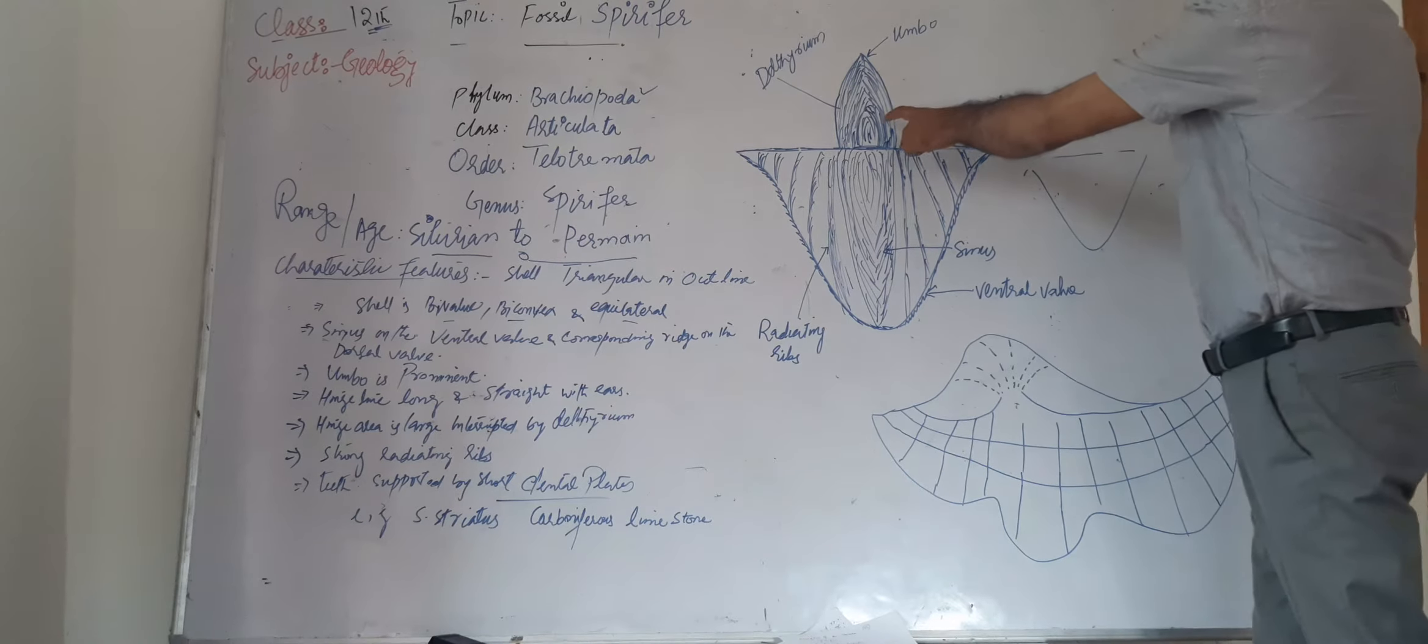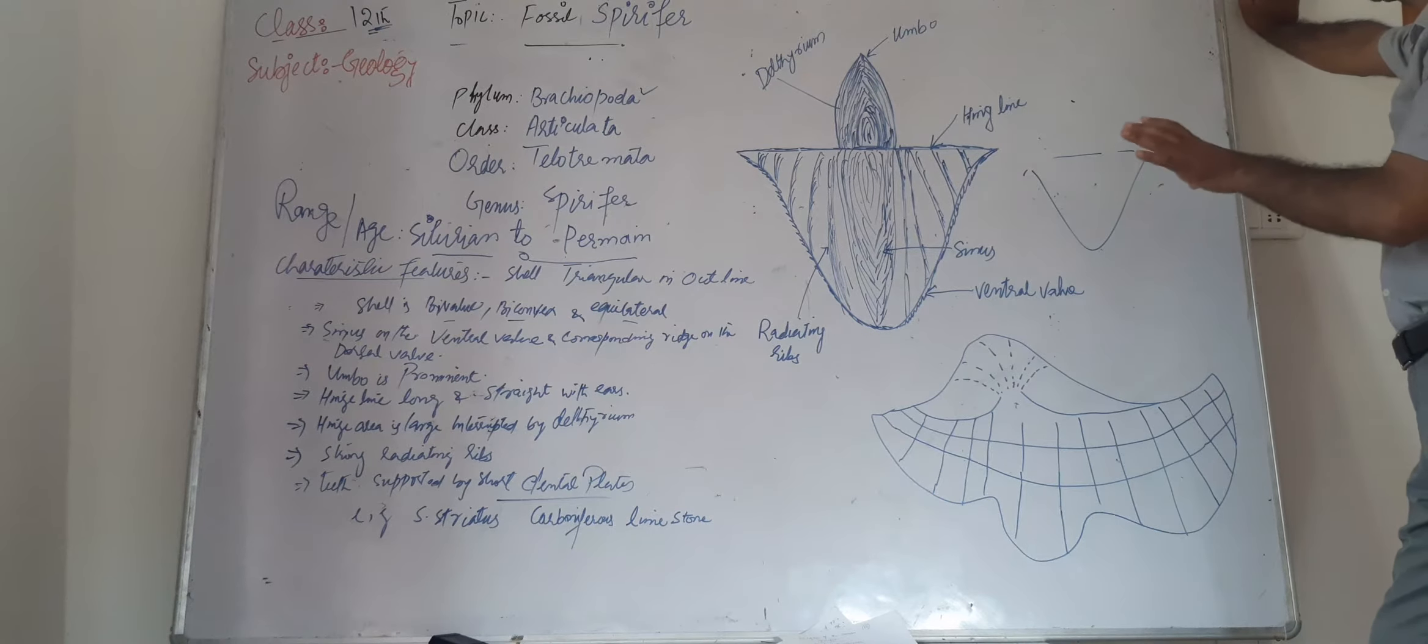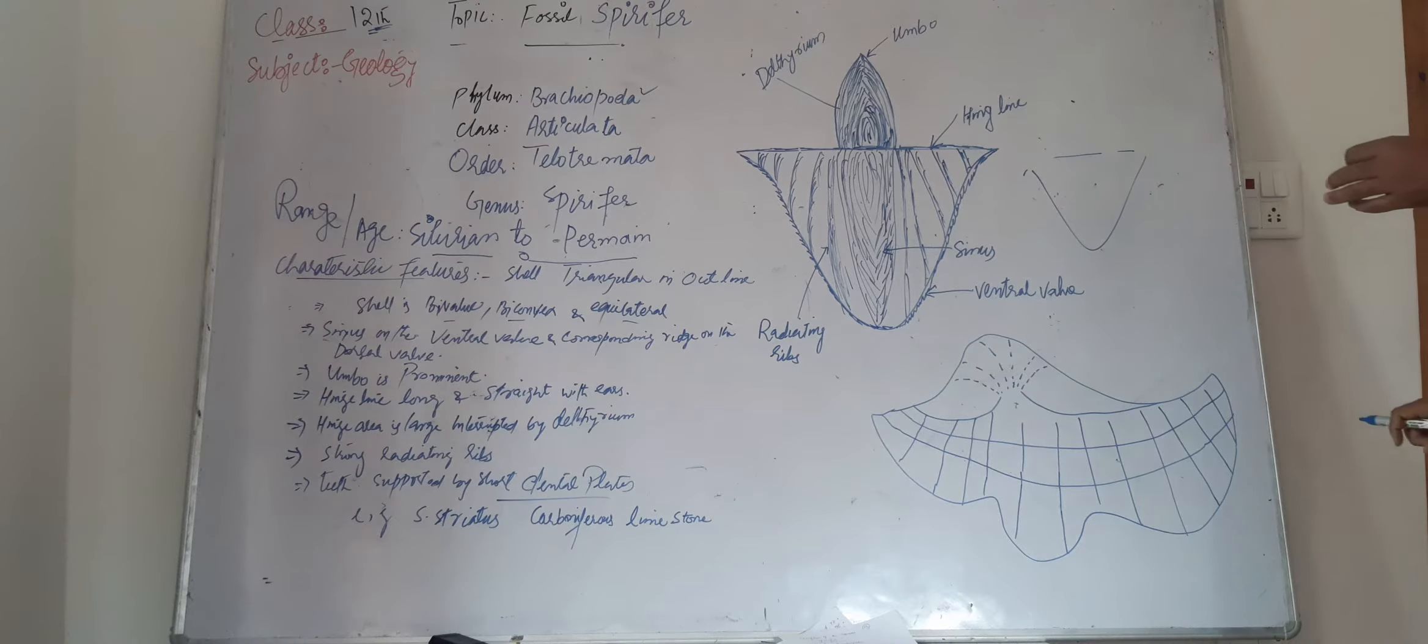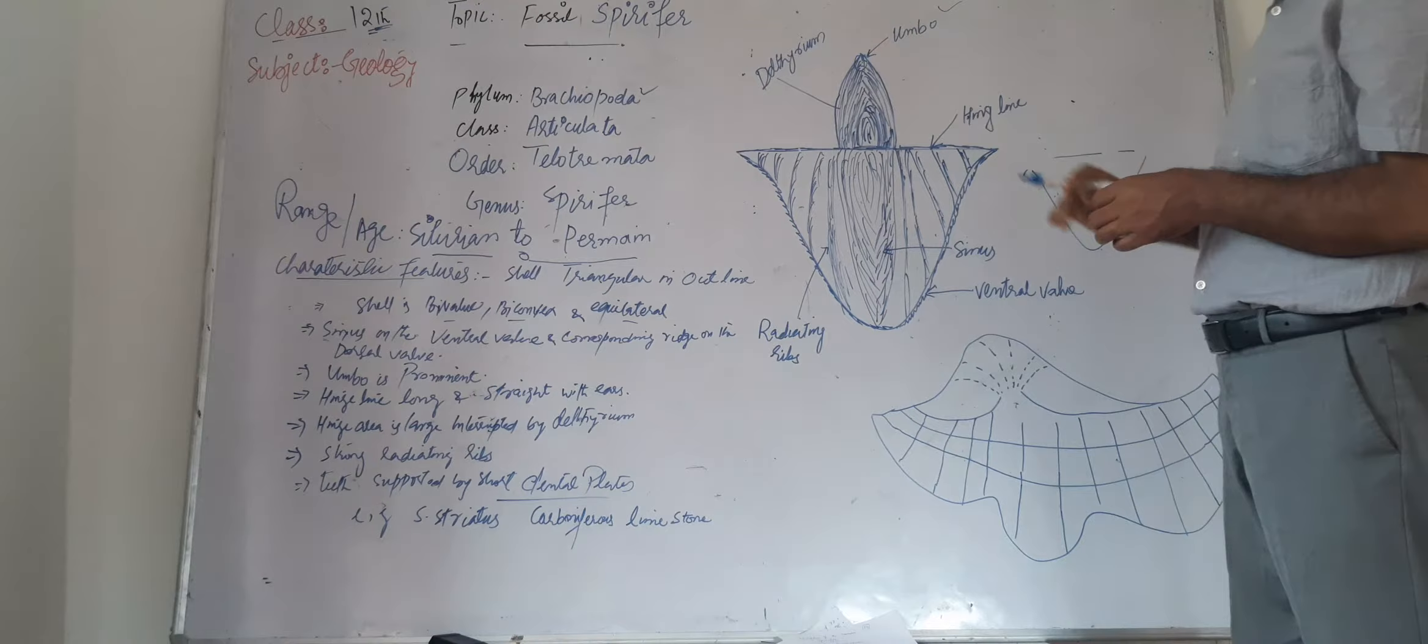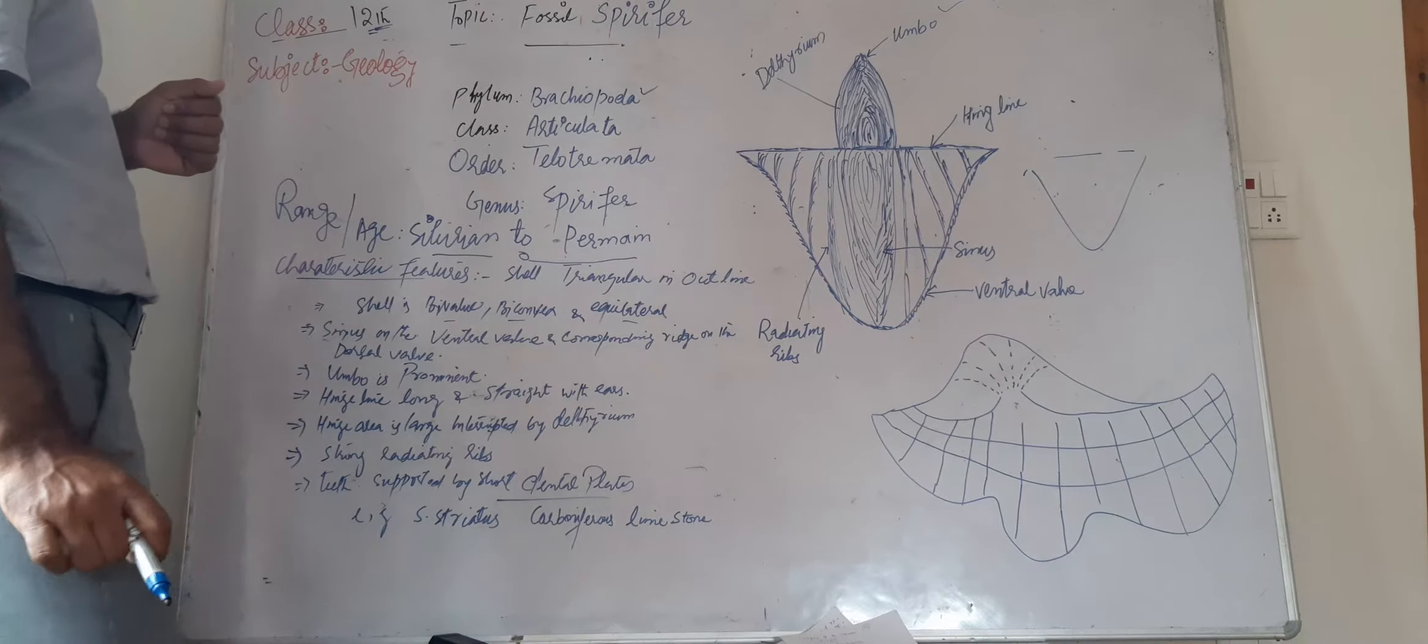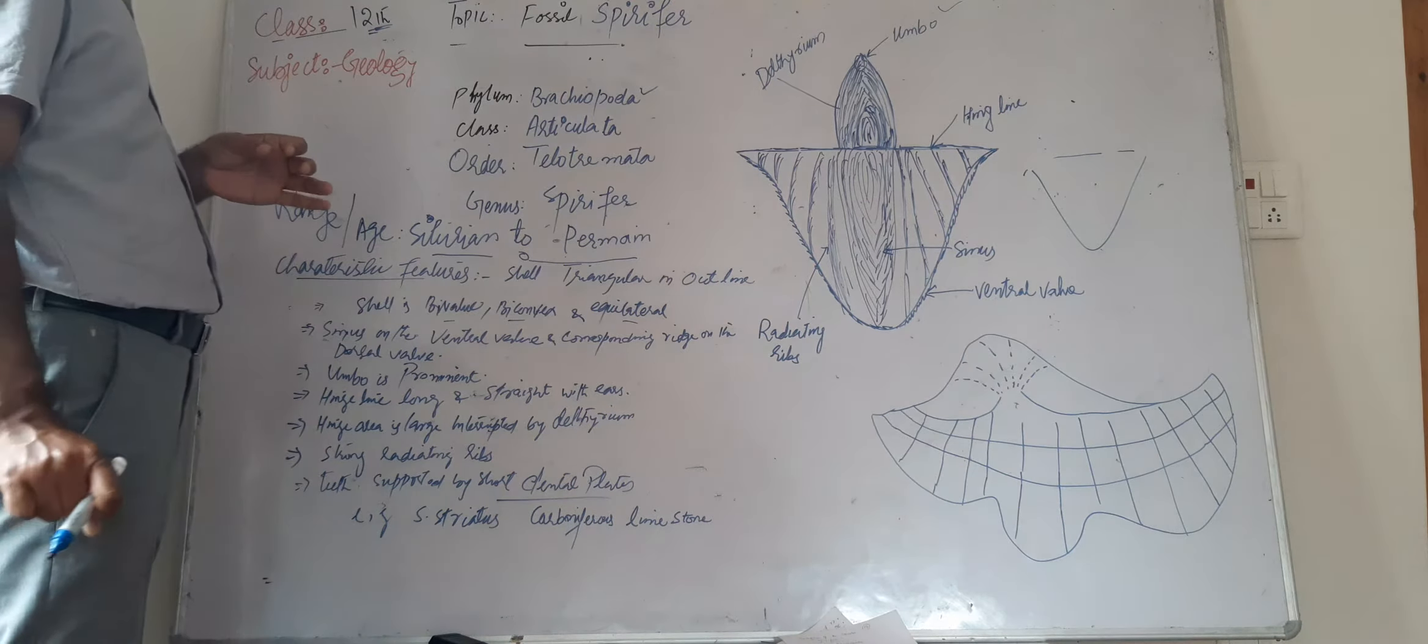The sinus on the ventral valve has a corresponding ridge on the dorsal valve. And when we see the umbo of this shell, which is prominent and clearly visible when we see the shell of Spirifer, the hinge line of the shell is straight, long, and straight.